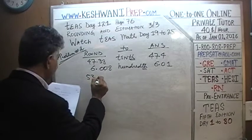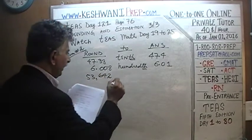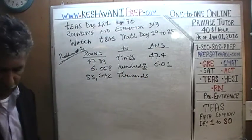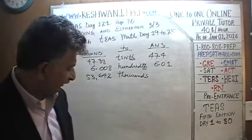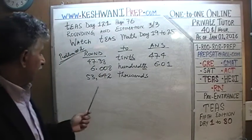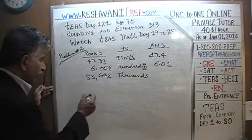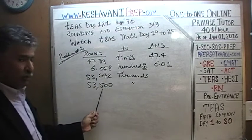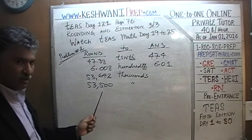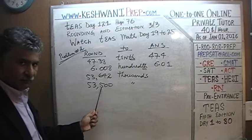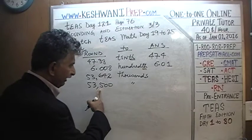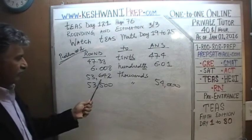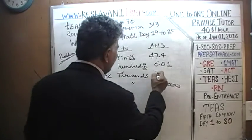53,642 — you're being asked to round it to the nearest thousands. How many thousands does 53,642 have approximately? Well, 53,000. Had it been 53,500 — since that is equal to or more than 500 — we would have rounded it to 54,000. The remainder here, 642, is more than 500, so 53,642 is going to be rounded to 54,000.